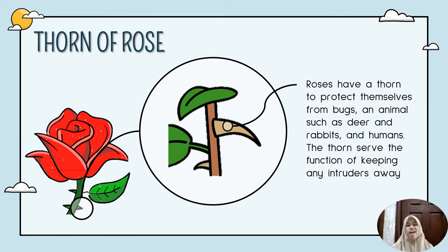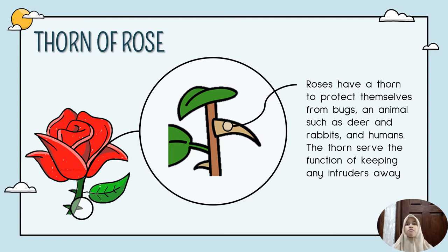Roses have a special part in their body — the thorn. Roses have thorns to protect themselves from bugs and animals such as deer, rabbits, and humans. The thorns serve the function of keeping any intruders away.